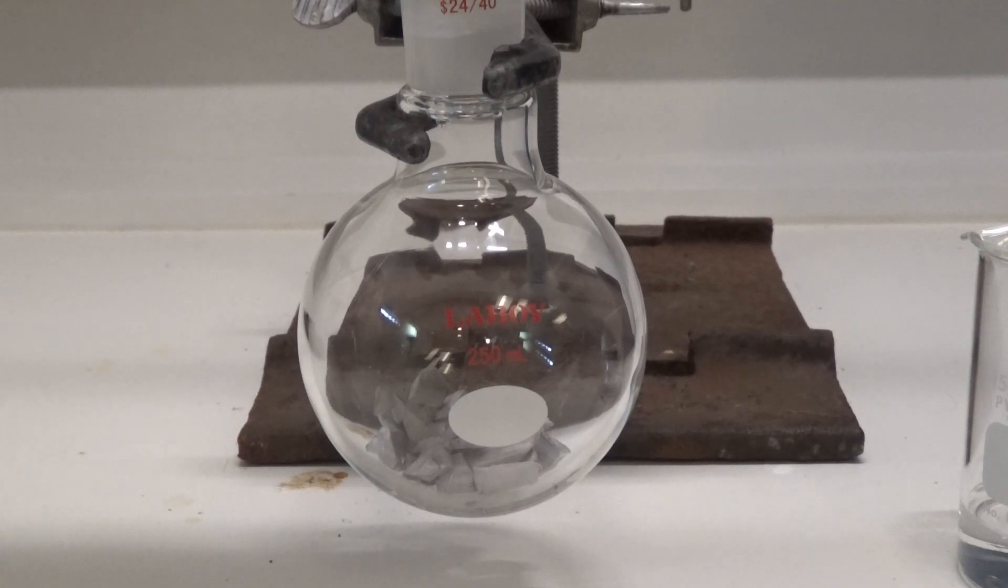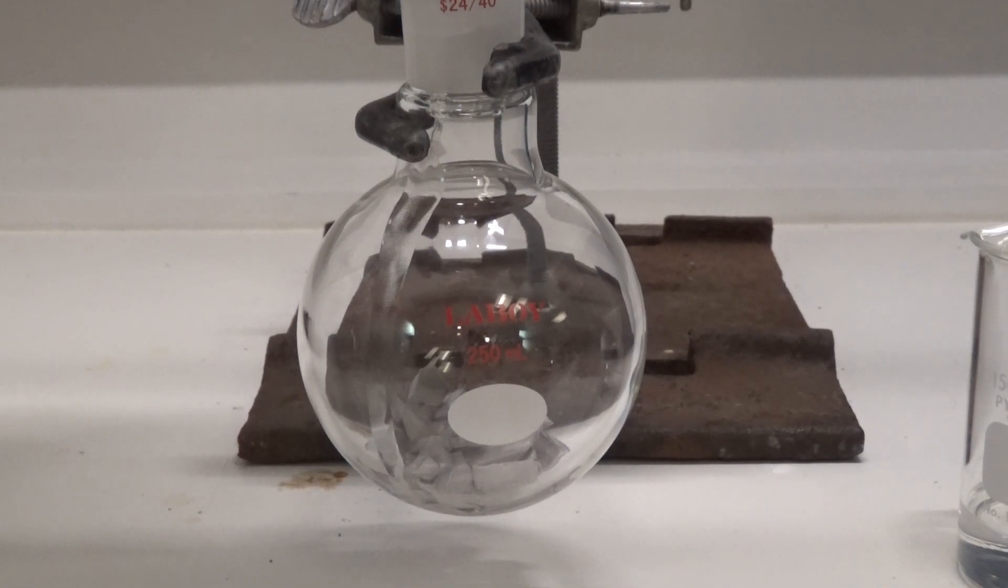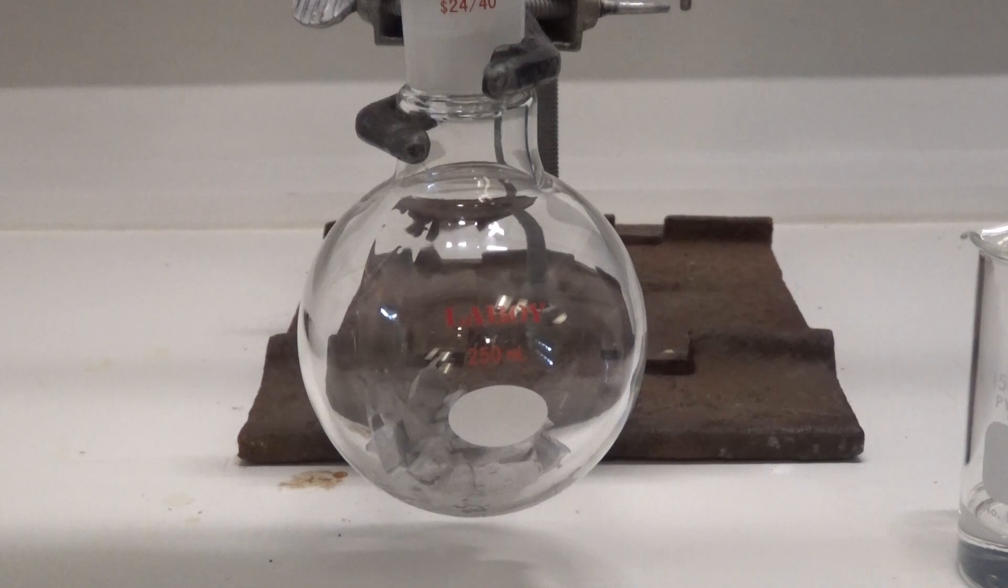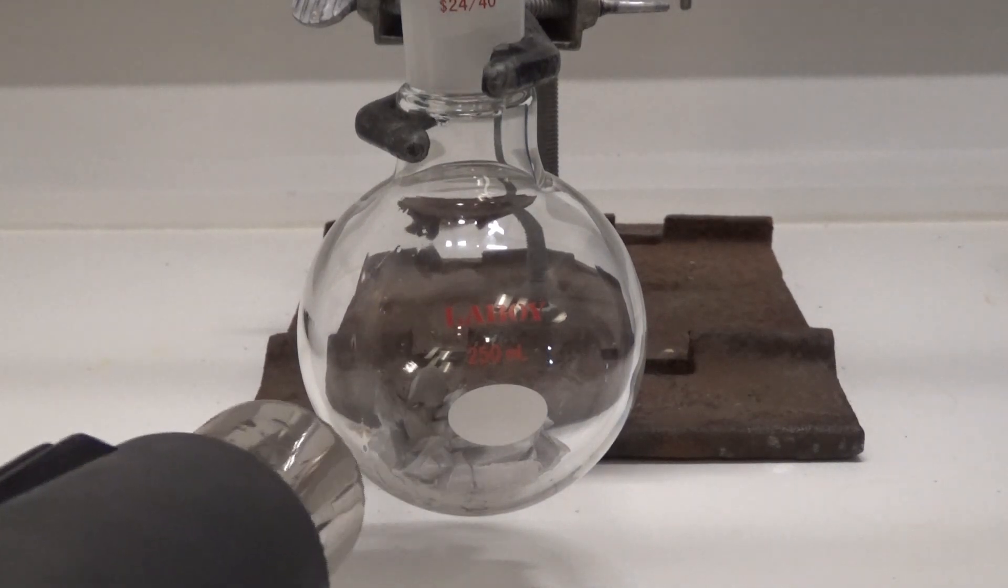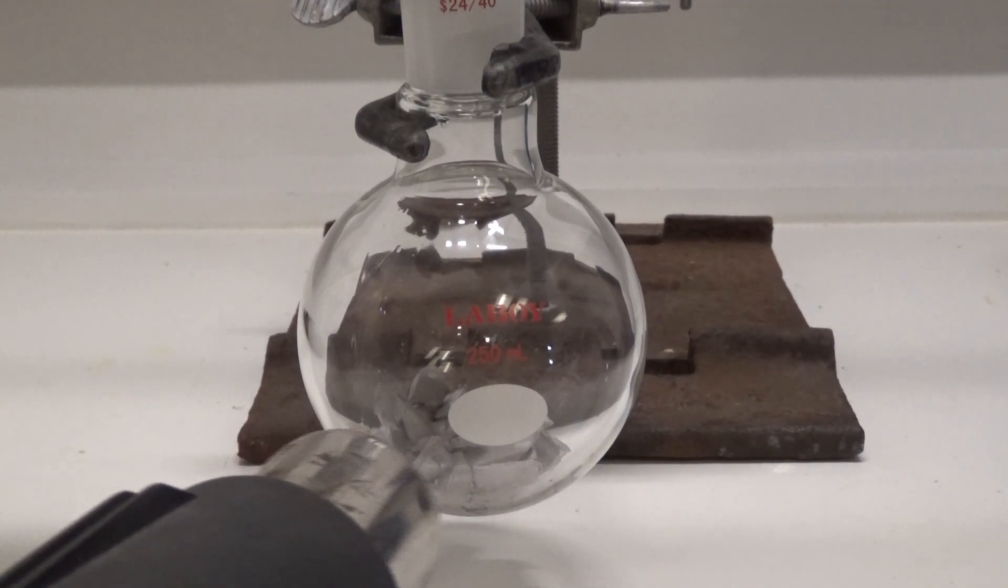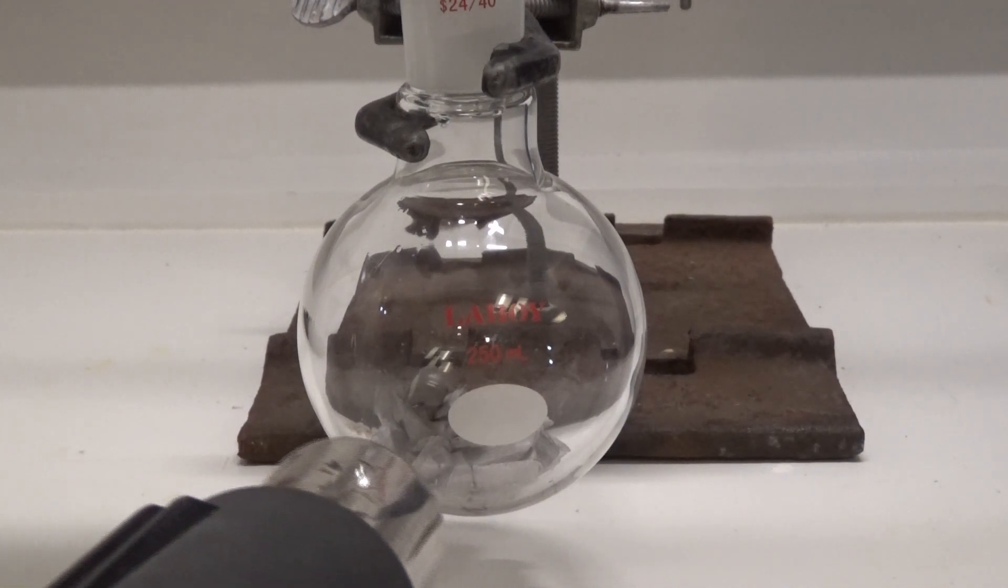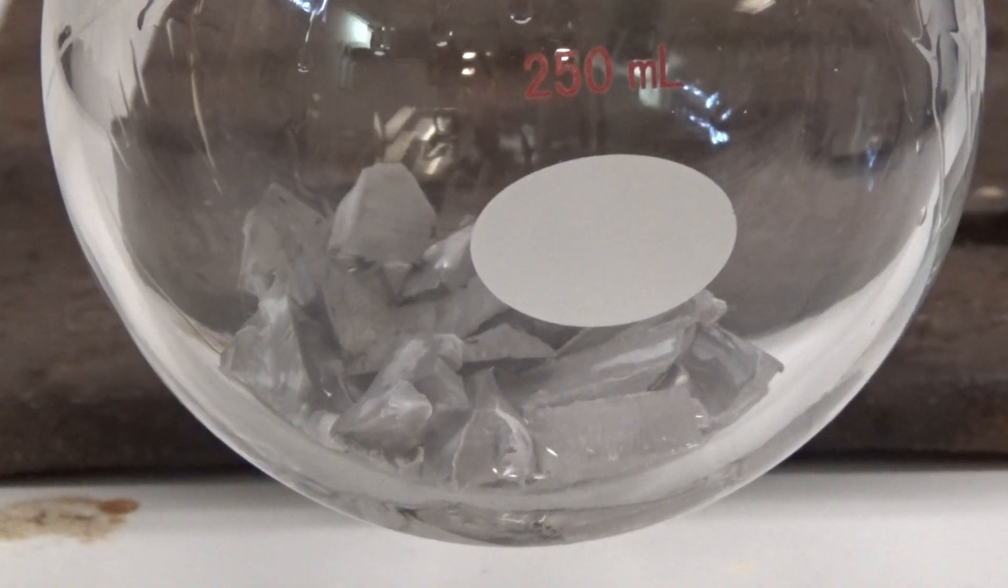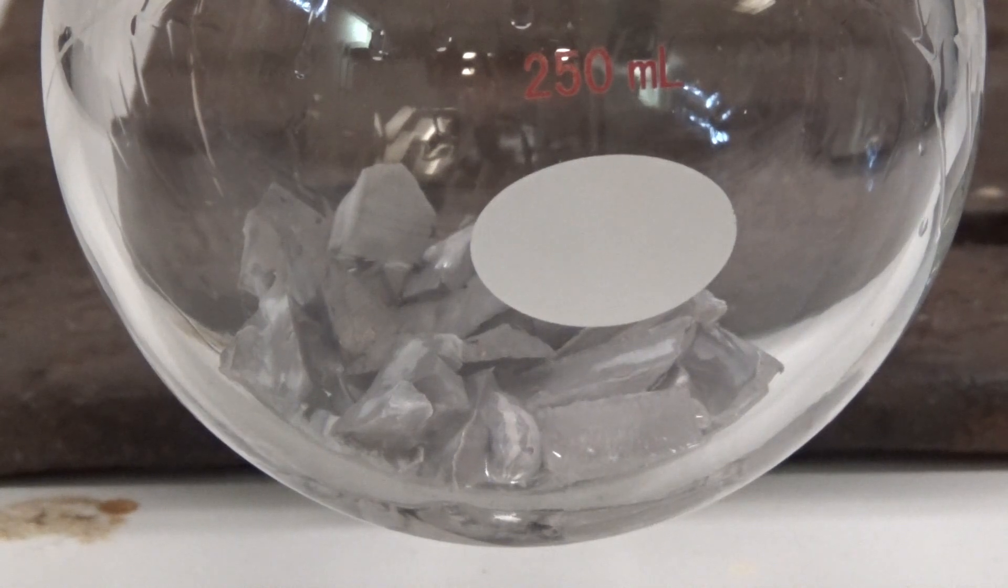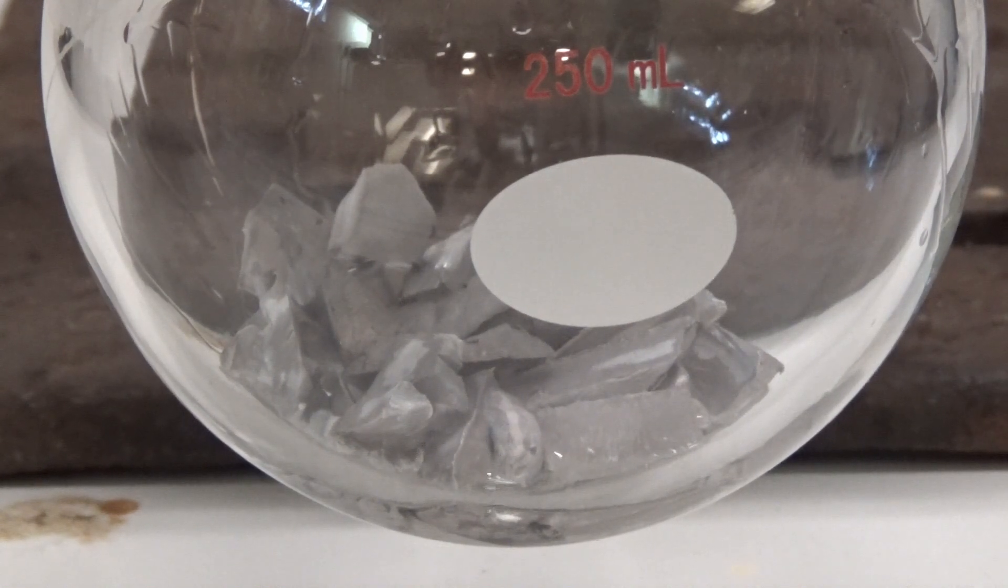I slowly dripped in the 1,3-dibromopropane, and it didn't really seem to do anything. I then added a bit more, and when there was no significant exotherm after a while, I started heating the flask gently with a heat gun. After hitting about 130 degrees, a reaction finally kicked off.